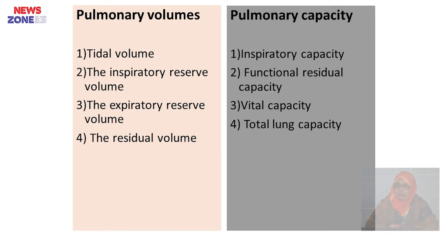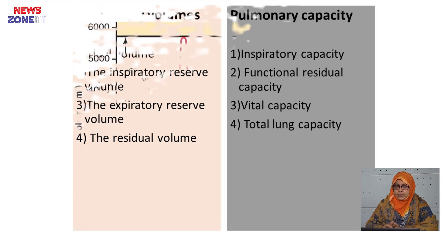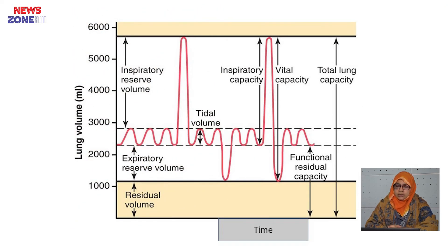There are four volumes and four capacities. The volumes are: tidal volume, inspiratory reserve volume, expiratory reserve volume, and residual volume. The capacities are: inspiratory capacity, functional residual capacity, vital capacity, and total lung capacity. This figure is very important — if you understand it, you can memorize all volumes and capacities.